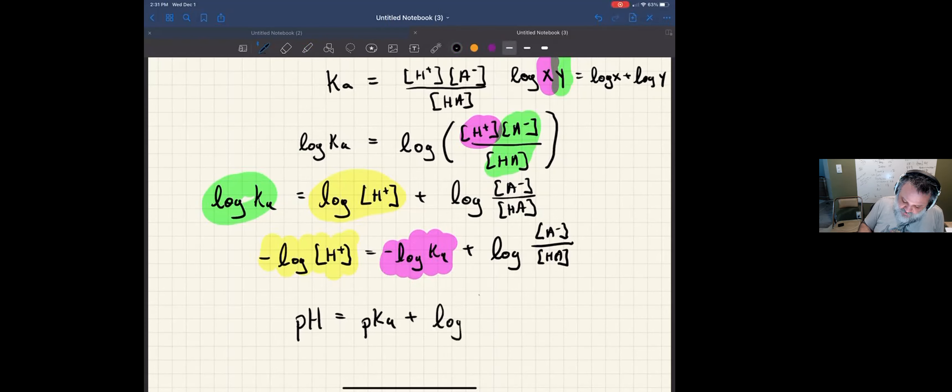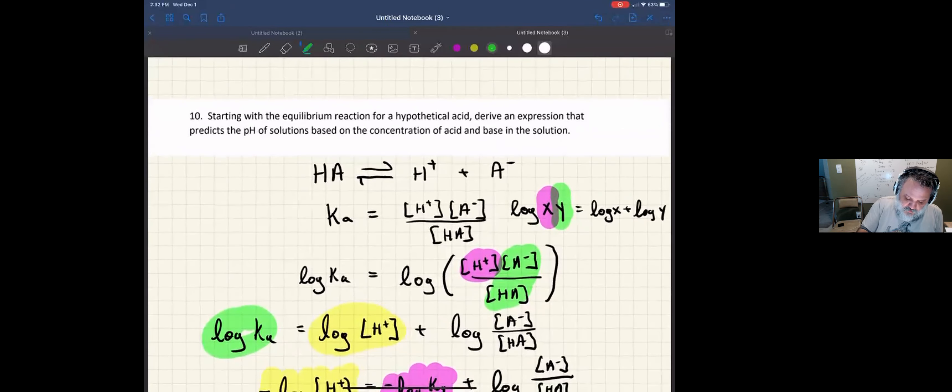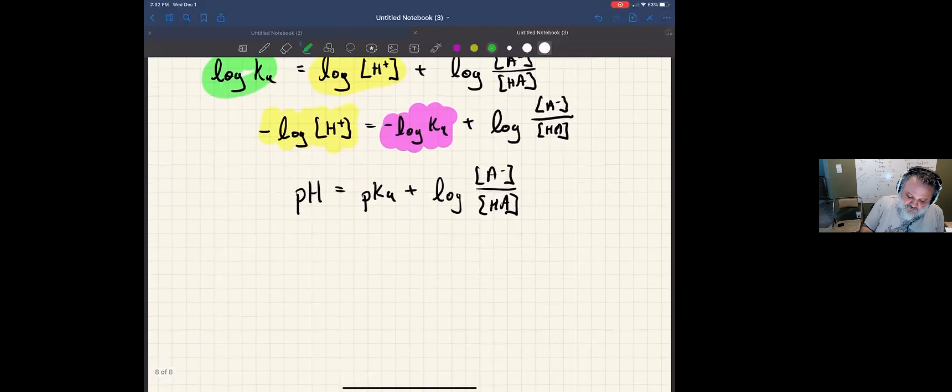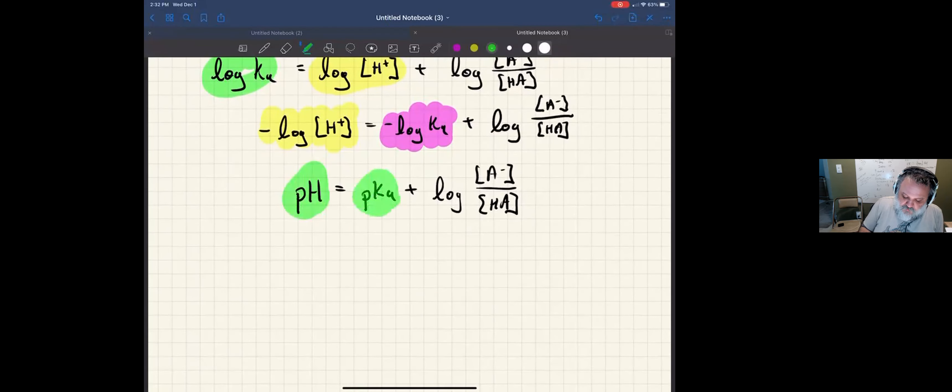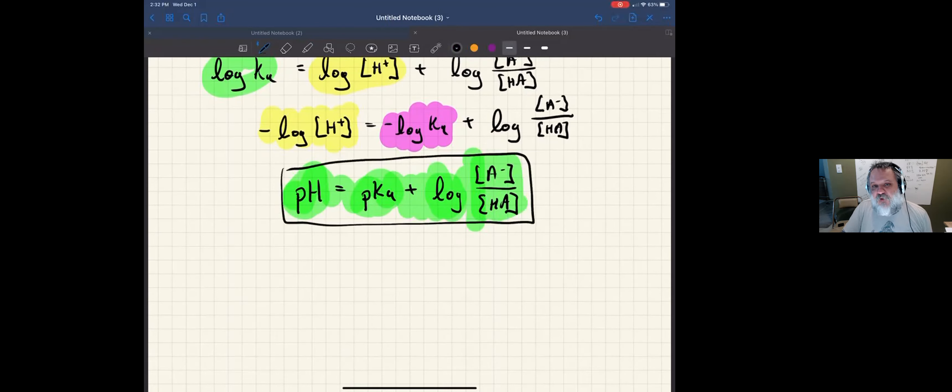So I'm just going to write the rest down. And so here is an expression that predicts the pH of a solution based on the concentration of acid and base in the solution. So the pH of a solution is equal to the pKa of the acid plus the log of the ratio of the base and acid in the solution. And this is the Henderson-Hasselbalch equation. And you should use this anytime you get into a buffer situation.